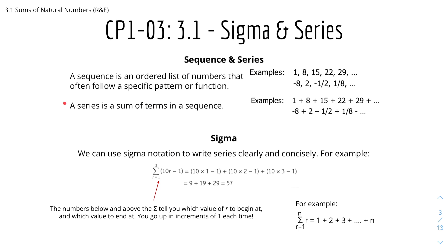A series, however, is the sum of the terms in the sequence. So for example, the sequence just now — we have 1, 8, 15, 22, and 29 — the series would be 1 + 8 + 15 + 22 + 29, which is basically the sum of the numbers.